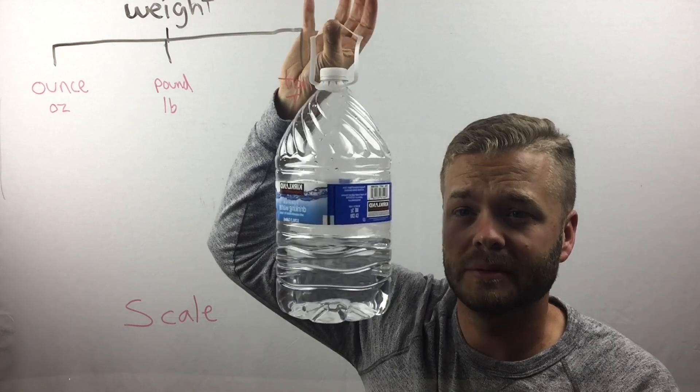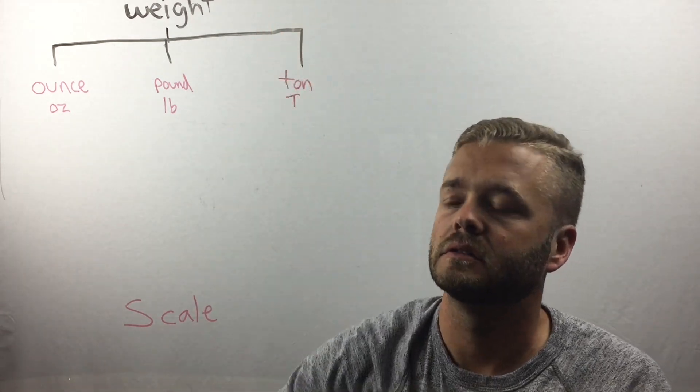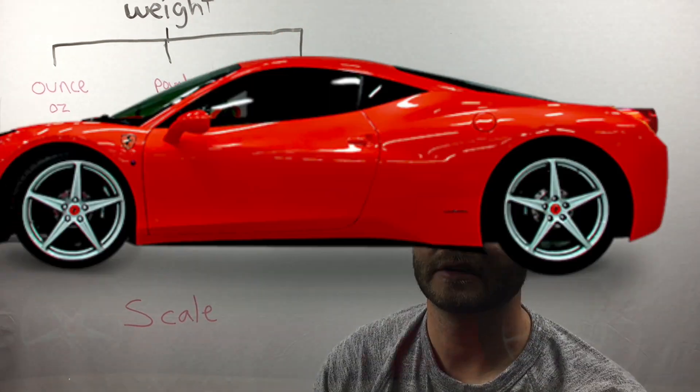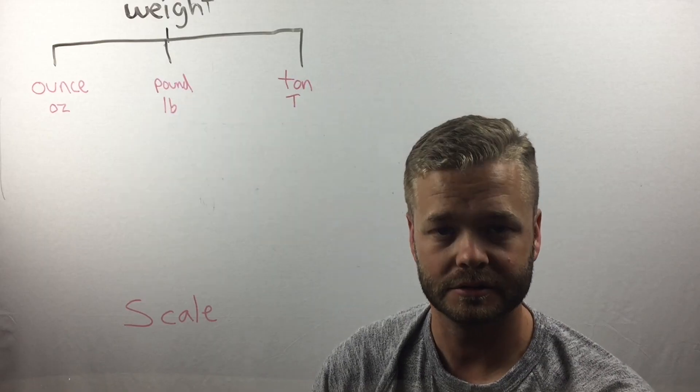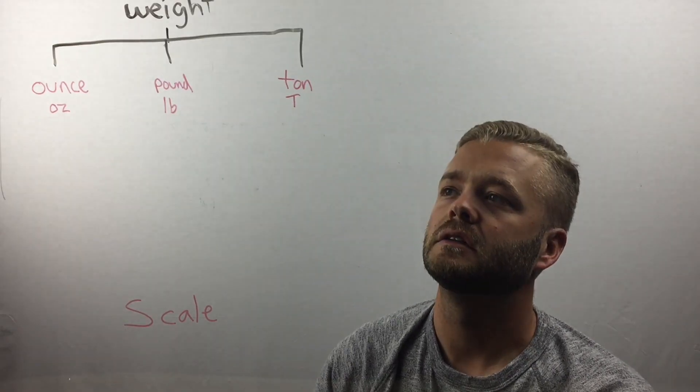If I was going to measure a full jug of water to see how much it weighs, I would use pounds. Tons are those extremely heavy things like cars, buildings, giraffes, rhinoceroses, triceratops, and elephants.